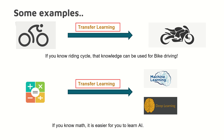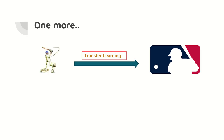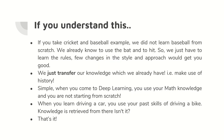One more exciting example: you know playing cricket, so you can transfer — move some of the features, some of the things you have used in playing cricket — to learn baseball. It's a simple thing. If you know cricket, you can learn baseball easily.